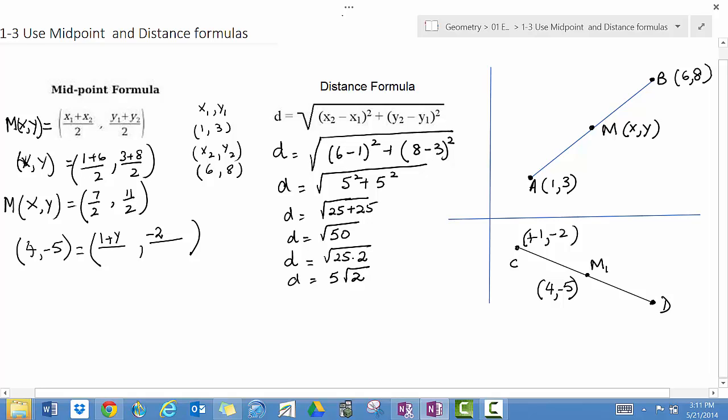And the second point is (x₂, y₂). So what we're saying is D has the coordinates (x₂, y₂).